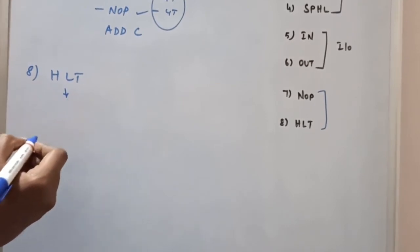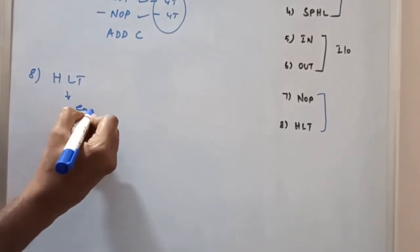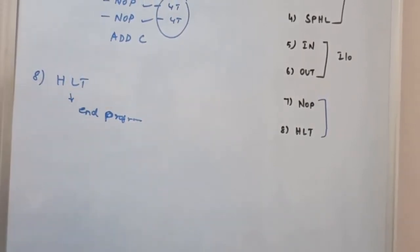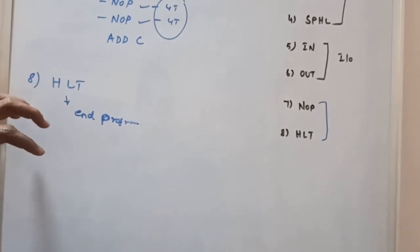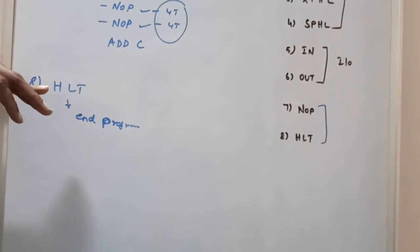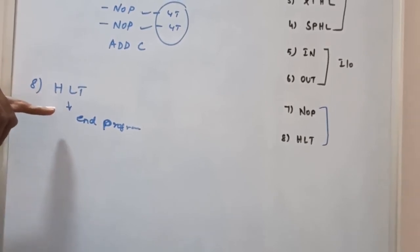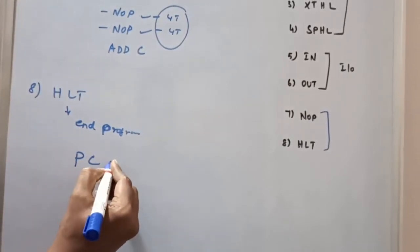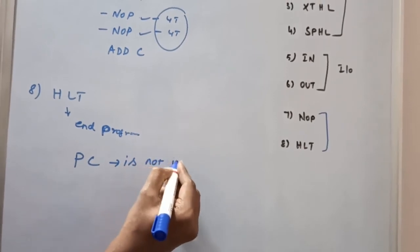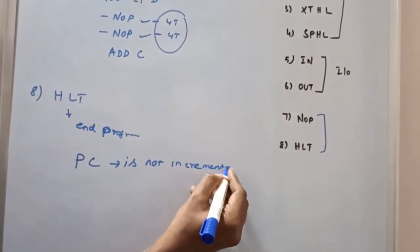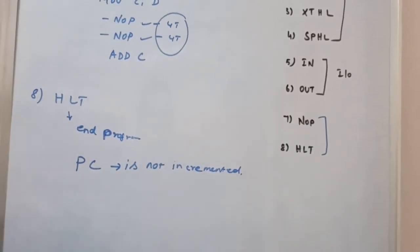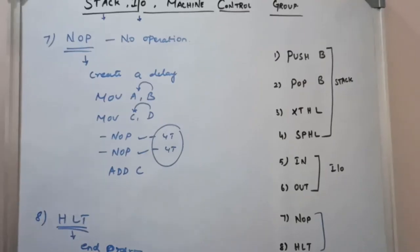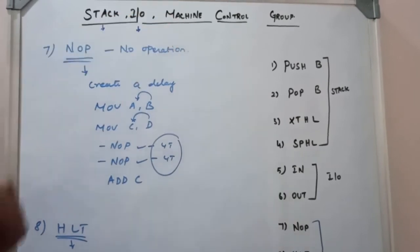The last instruction is HALT, which is used to indicate the end of the program. The microprocessor understands this instruction — after execution of HALT, the program counter value is not incremented. There are no further instructions to execute, which is indicated by the HALT instruction. So far we have discussed the Stack, I/O, and Machine Control group instructions.